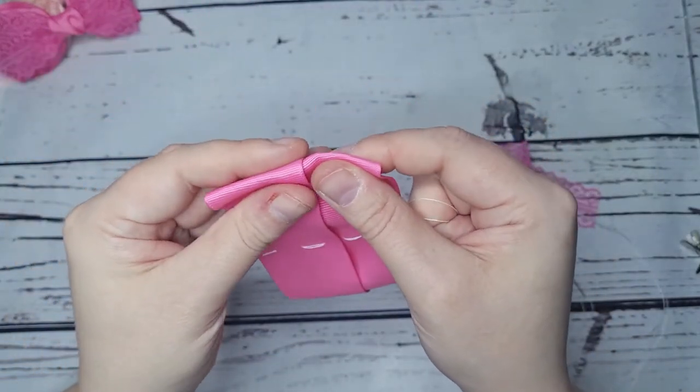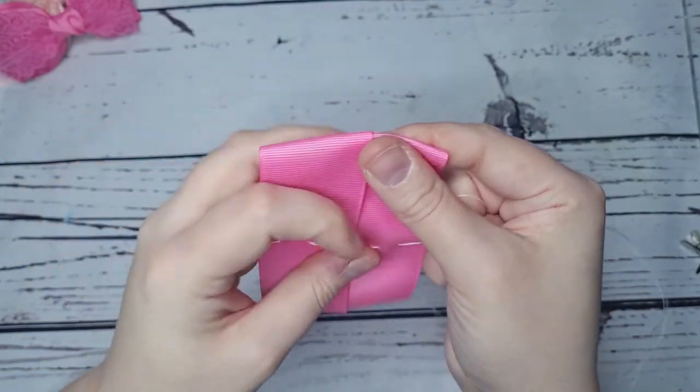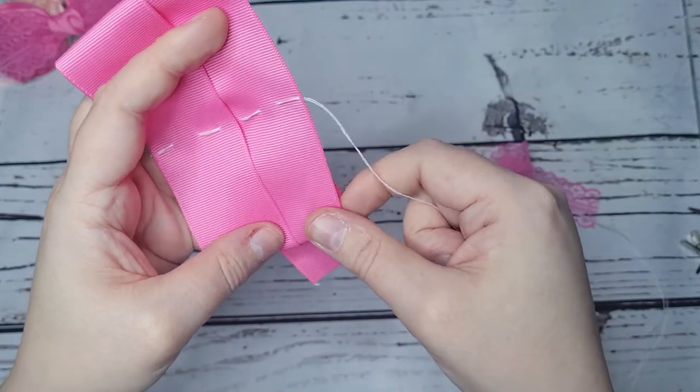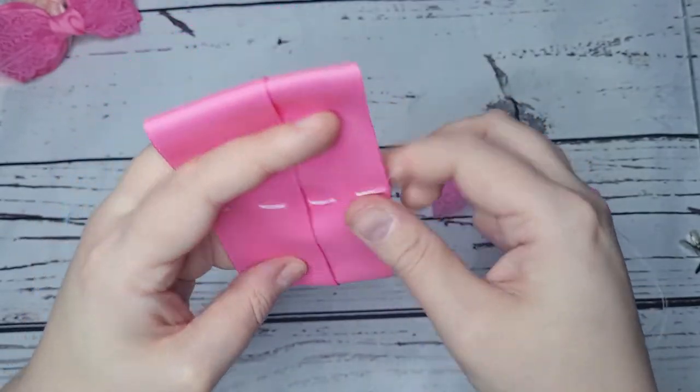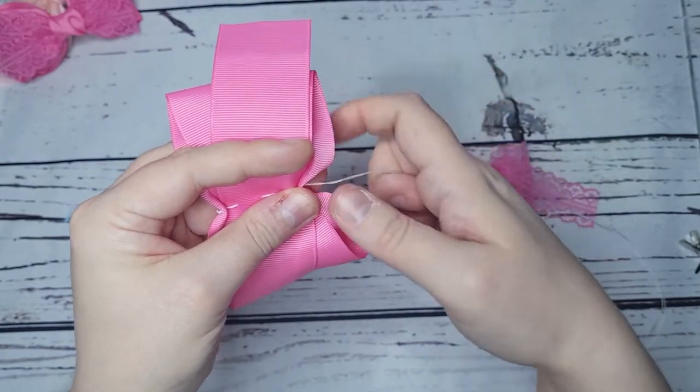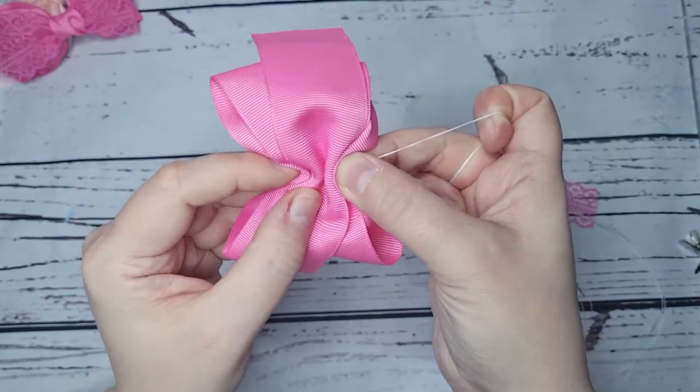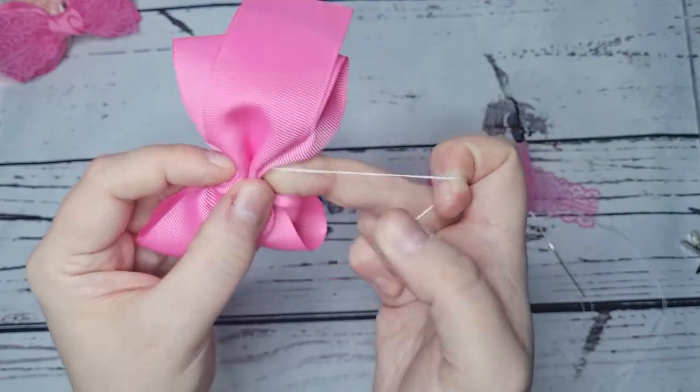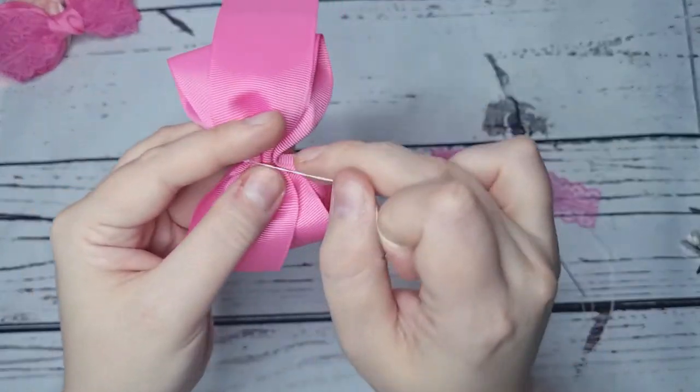I'm just going to pop that in. Cinch to get your creases - one, two, three, four. Wrap your thread round a couple of times. I do like three or four, and then stitch off.